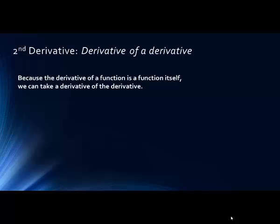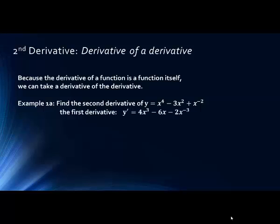So let's look at what that means notationally. Because the derivative of a function is itself a function, we can take a derivative of the derivative. For example, find the second derivative of y = x^4 - 3x^2 + x^-2. By now you should be able to take the first derivative pretty simply and quickly, and by that we get 4x^3 - 6x - 2x^-3.